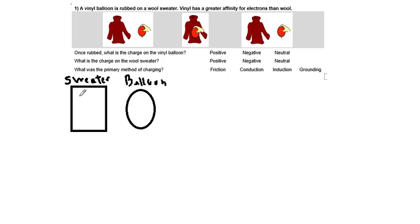And here's going to be our balloon. Now the sweater at the start will be neutral. So I'm going to draw four pluses, and every plus will have a minus that goes with it that counteracts it, so it's neutral.